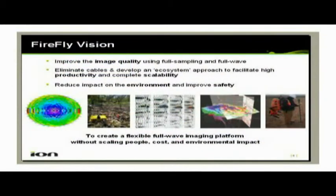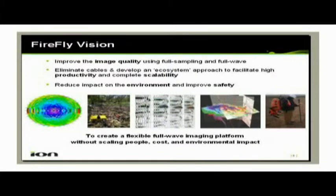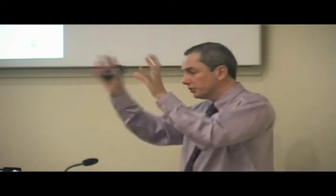This was the Firefly Vision as we set it out about three or four years ago. We wanted to address three main topics. First, we wanted to improve the image — that's what we're trying to do as geophysicists — using full sampling: wide azimuth, more densely sampled, long offsets, and full wave, which is the multi-component element. We decided that cables were one of the inherent problems in future acquisition systems, so we wanted to get rid of those. We also wanted to develop an ecosystem approach, whereby instead of just building a piece of hardware, we integrate technologies with a software wrapper around all of the hardware to incorporate new technologies and make the whole thing more efficient.